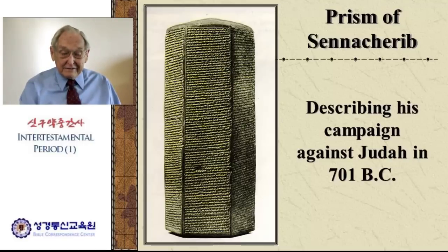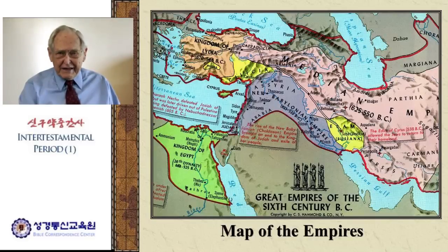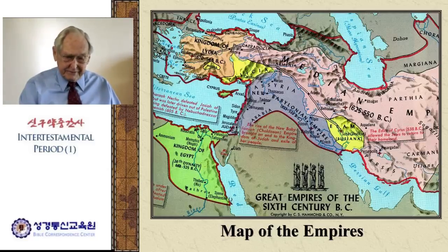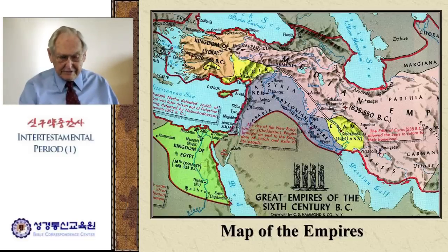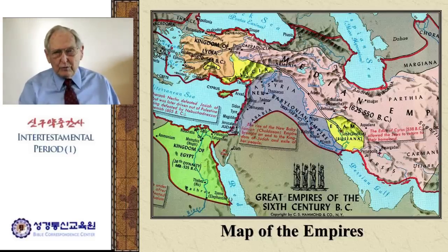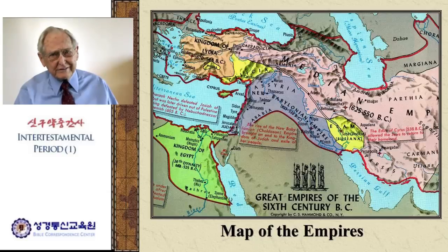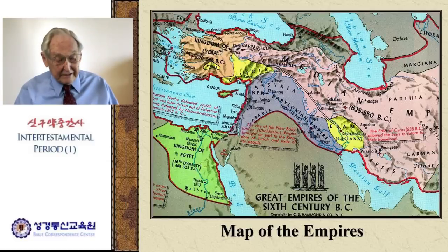On the prism of Sennacherib, we have a statement that he thought he really had the people of Judah sewn up. He says, 'Judah is like a bird in a cage to me.' Well, it didn't work out that way. The kingdom of the Assyrians was an enormous empire, and they were ruthless people who went all over the place giving all sorts of trouble. The Assyrian Empire was very powerful, and its people were as ruthless as they could be — they have gone down in history as some of the most ruthless people in the entire history of the world.